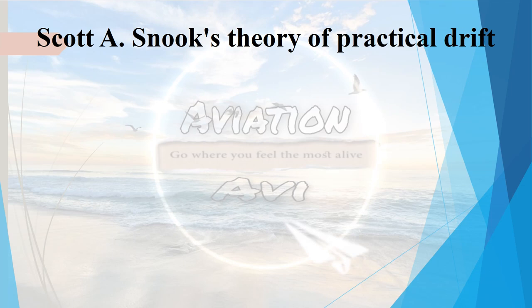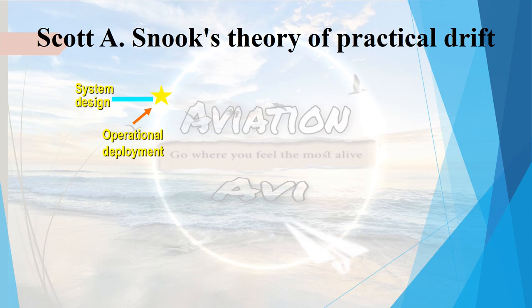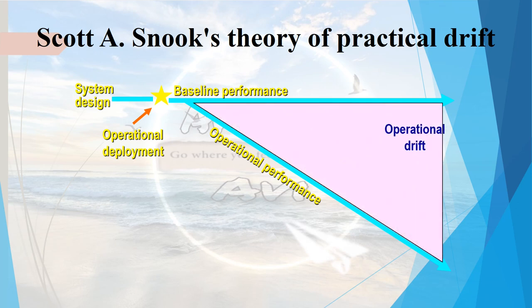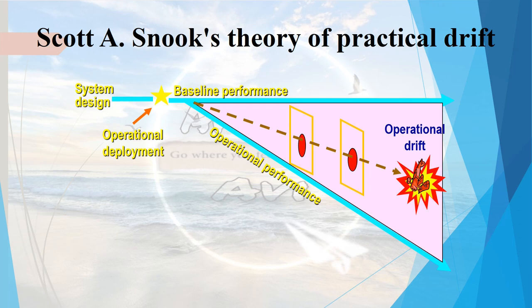Let us look at Scott A. Snook's theory of practical drift. This theory is used to understand how the performance of a system drifts away from its original design. Tasks, procedures, and equipment are often initially designed and planned in a theoretical environment under ideal conditions, where it is assumed that everything can be predicted and controlled and every function will go as expected. Once operationally deployed, the system should ideally perform as designed — this is the baseline performance. But in reality, operational performance differs from the assumed baseline as a consequence of real-life operations in a complex, ever-changing, and usually demanding environment. Since drift is a consequence of daily practice, it is referred to as practical drift.